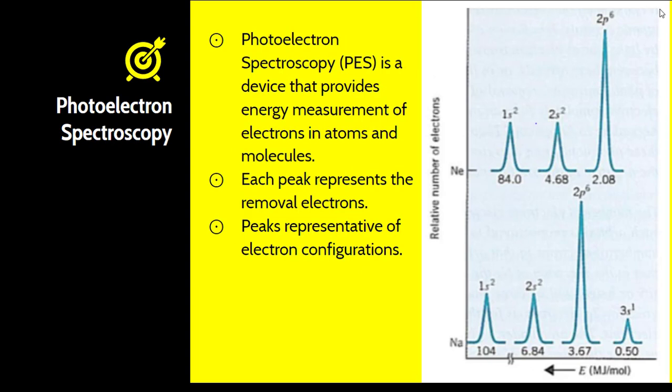This explains why things like neon have high ionization energies — it's very difficult to remove an electron because it's closer to the nucleus. It also explains why ionization energies of group 1 and group 2 are relatively low, because those electrons are further away from the nucleus. Photoelectron spectroscopy is a device that provides energy measurement of electrons in atoms and molecules. Each peak represents the removal of electrons and corresponds to electron configuration. Looking at neon — 1s2, 2s2 — those peaks are relatively the same height. When you get to 2p6, that peak is roughly three times higher because it contains six electrons versus two. We can take a look at these graphs and determine the electron configuration and the element present. For sodium, the 3s1 peak is half the size of 2s2 because it only has one electron in that particular orbital.